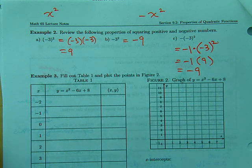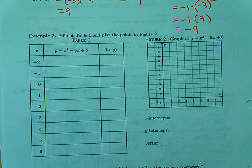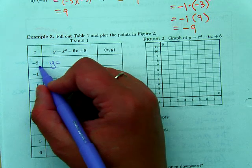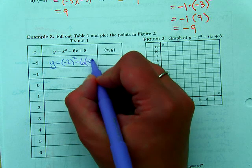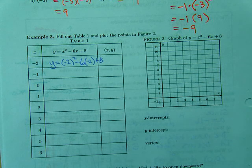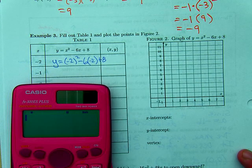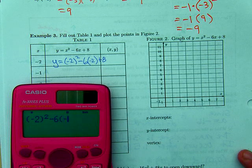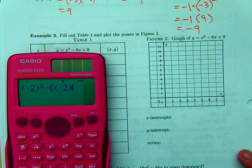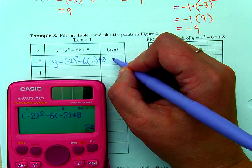Let's do an example here. One way to graph anything is to make a table of values. When you do a table of values, we're plugging in negative two squared minus six times negative two plus eight. So we're going to do all that math on our calculator or by hand. It's really important to put that negative in parentheses. There's a difference between the negative sign and the subtraction sign. And we get 24.